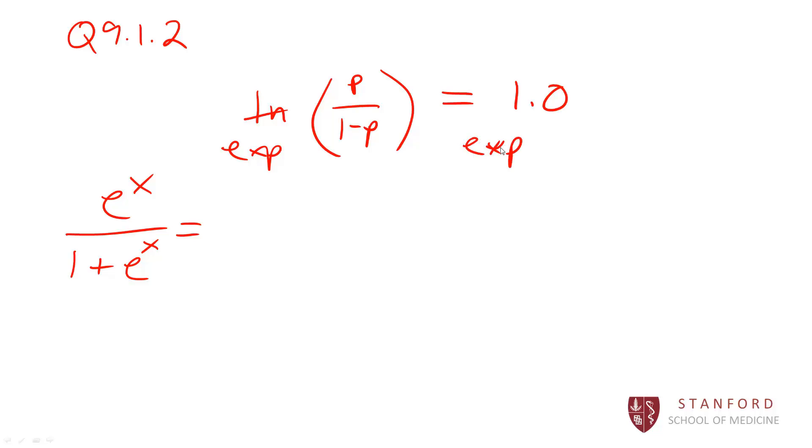That's where we get the exponential in here. We would exponentiate both sides. Then you can multiply both sides by 1 minus p.